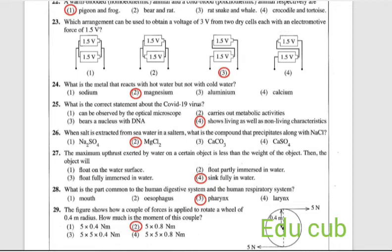Question 26: when salt is extracted from seawater in Sathun, what is the compound that precipitates along with sodium chloride? Maybe if you are observing salt at home, you can see some silvery precipitate. It is magnesium chloride. The answer is the second one.